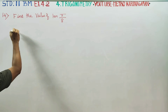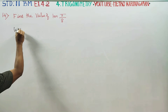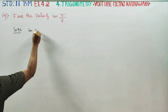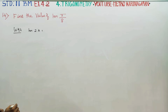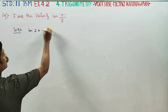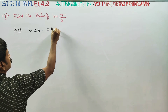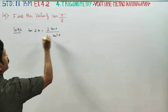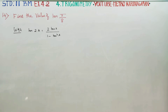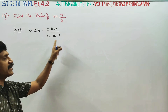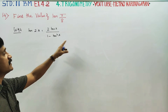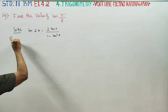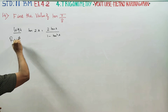First, we recall the multiple angle formula: tan(2a) = 2·tan(a) / (1 - tan²(a)). We will apply this multiple angle formula to solve the problem.